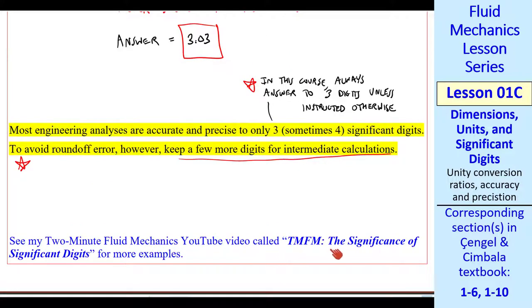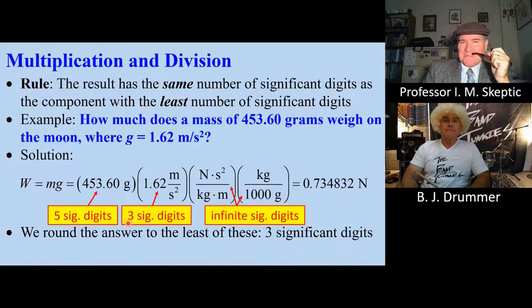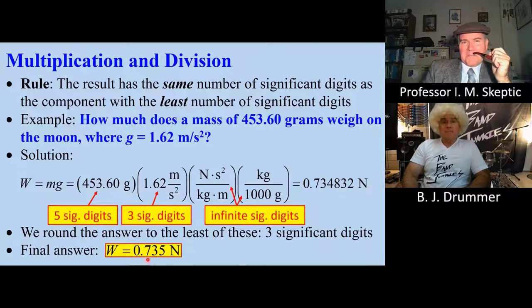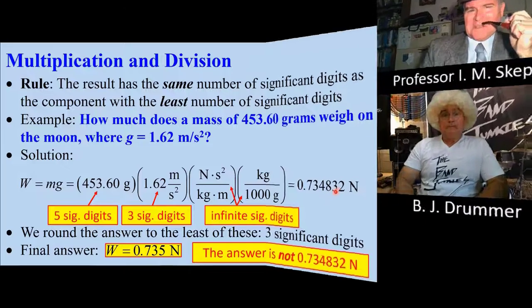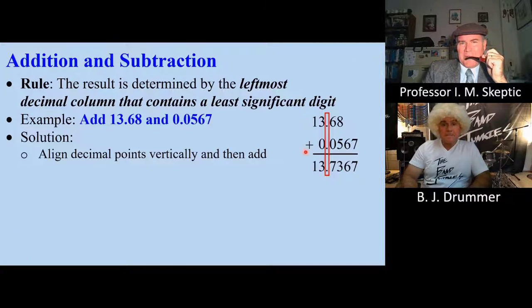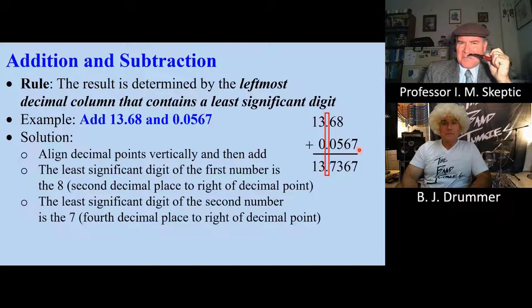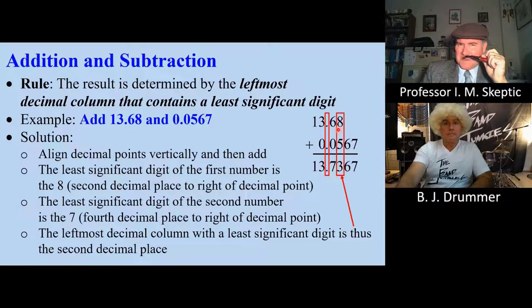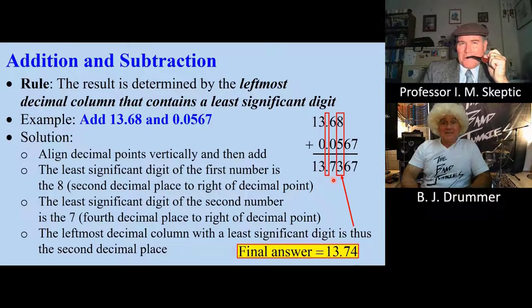Finally, I have another short YouTube video called The Significance of Significant Digits. I'll show a little clip here. I don't understand significant digits, especially when adding or subtracting. Alright, I'll share my slides on that. This number has 5 significant digits. This one only 3. These conversion ratios have infinite number. Since the lowest of these is 3, we round to 3 significant digits. Our final answer is 0.735 newtons. We wouldn't report the answer like this. These digits are meaningless and not significant. Here's an example. Add these two numbers. We align the two numbers by the decimal point and then add. The least significant digit of this first number is the 8. The least significant digit of the second number is 7. This 8 represents the leftmost column with a least significant digit. So this second decimal place is the least significant digit in our answer. We round to 13.74 for our final answer.